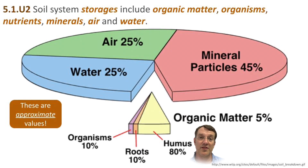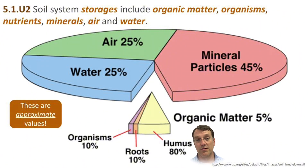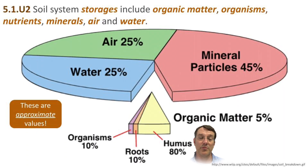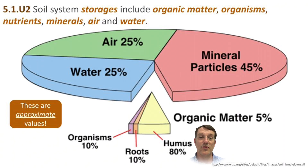You'll notice in this graph that the bulk of what's in soils are the abiotic components — the mineral particles, the air, and the water — and that only a small proportion comes from living organisms or dead and decaying organic matter. You don't need to know these percentages; just know that the bulk of soils is made up of minerals, air, and water.